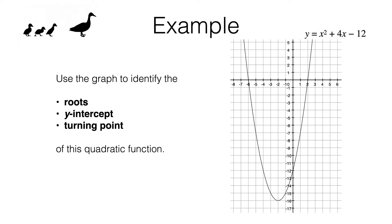Now let's answer these questions starting with the easiest part, the y-intercept. You've come across y-intercepts before when you looked at straight line graphs. The y-intercept tells us where the line or curve crosses the y-axis, and in this case it crosses the y-axis at negative 12.